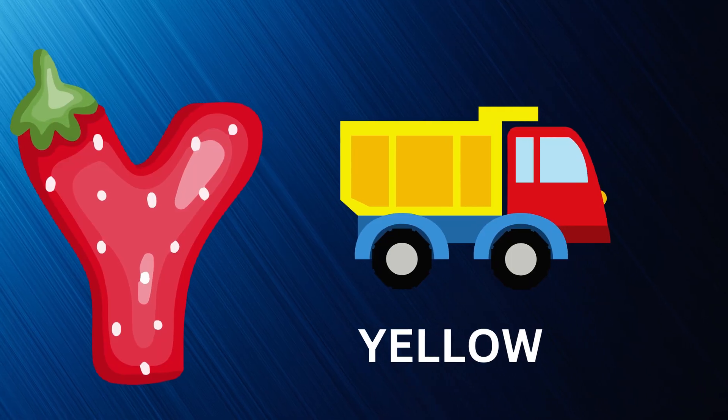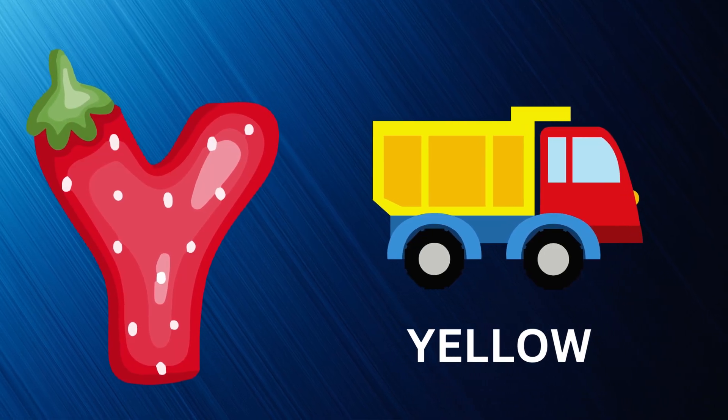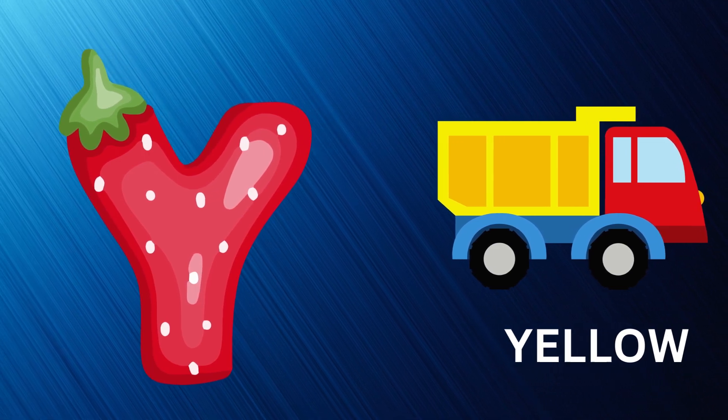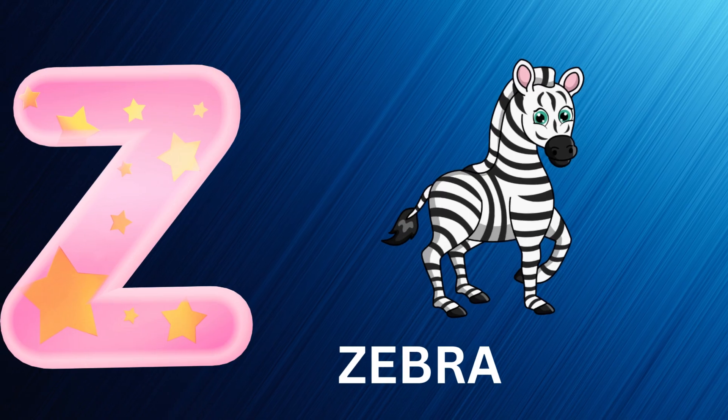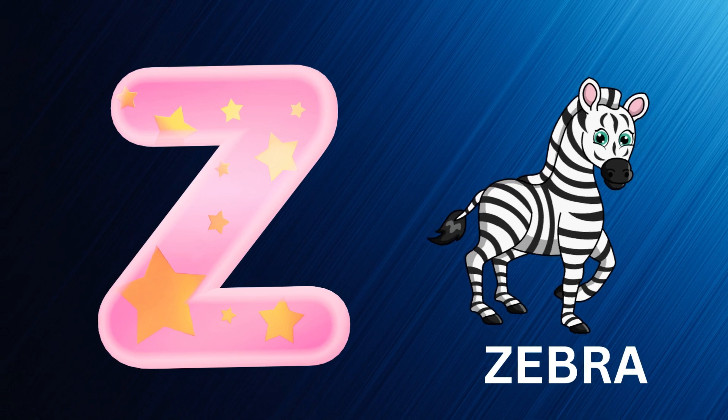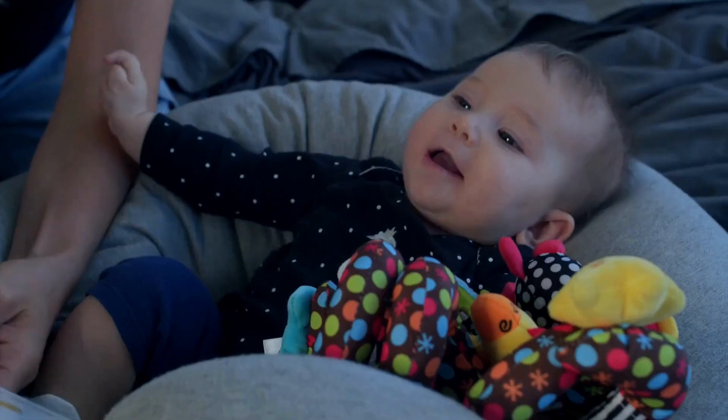Y is for yellow, ye-ye-yellow. Z is for zebra, z-z-zebra.